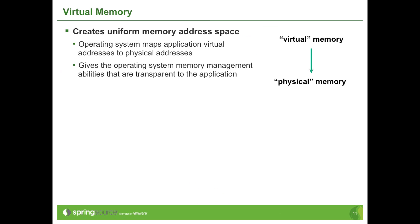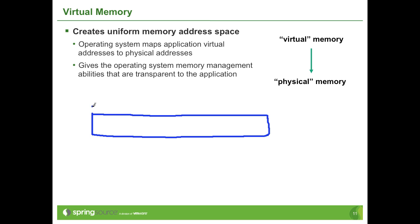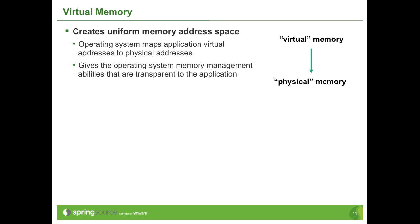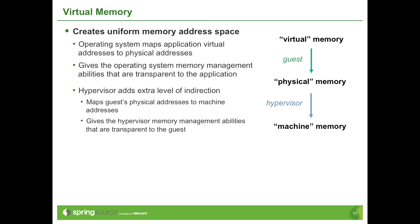Now let's examine the levels of abstraction that exist between the memory managed by an application and the memory managed by the hypervisor. When an application needs memory, it asks the operating system for a chunk of a particular size. The OS gives the application what looks like a contiguous chunk of memory, but these addresses are virtual, giving the OS a level of indirection. The hypervisor adds a further level of indirection, mapping physical memory to machine memory — the real RAM in the host hardware.